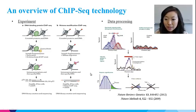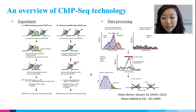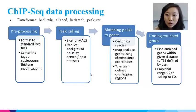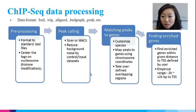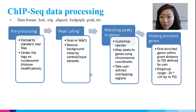Significant peaks can be associated with nearby genes to identify genes that are subject to transcription factor regulation or histone modification. Here is a workflow for CHIP-seq data processing. Starting from aligned sequences, the preprocessing step is to make sure the input files for peak calling software are in standard format.